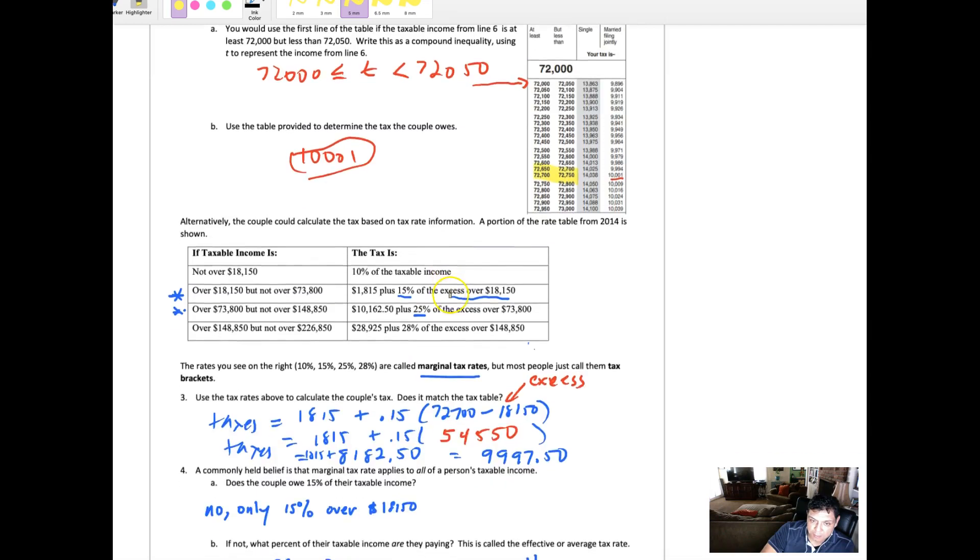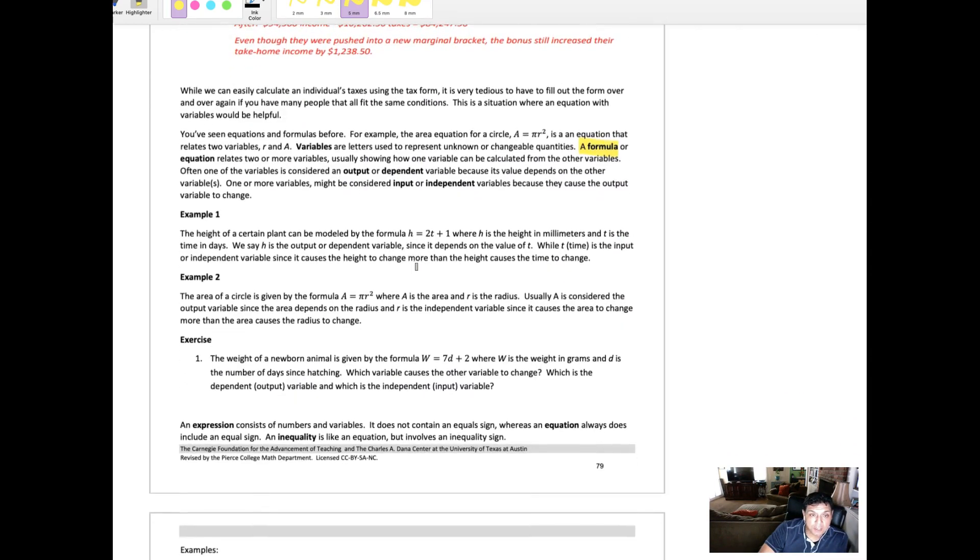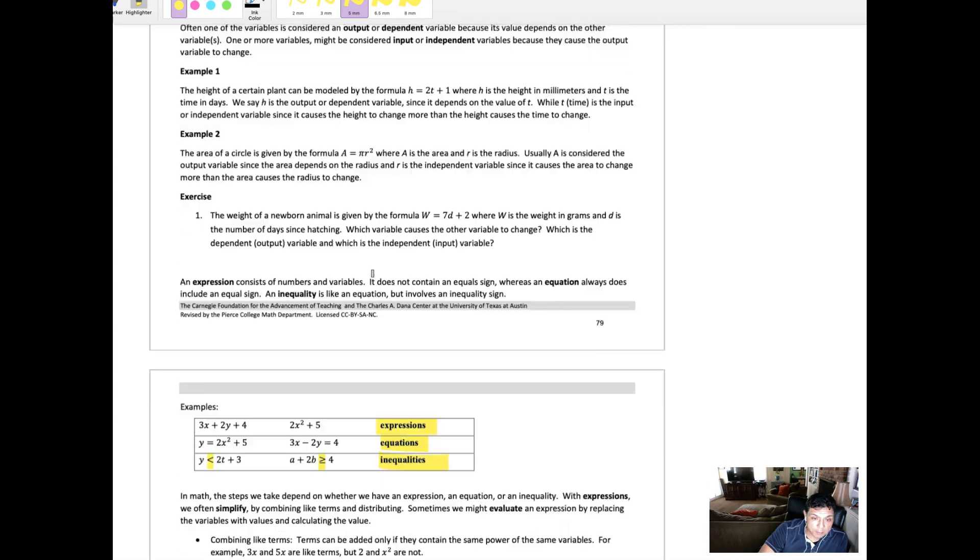Your income is the independent variable. And then the taxes are the dependent variable because they're related to that. So that's what we're looking at in these examples.